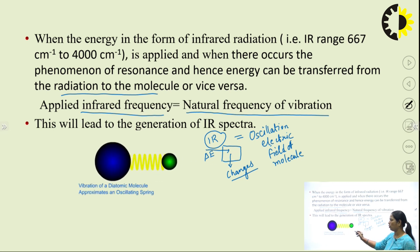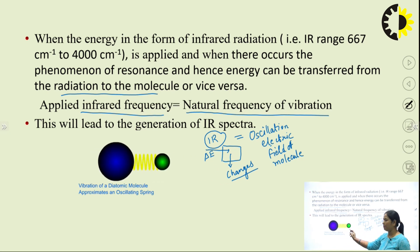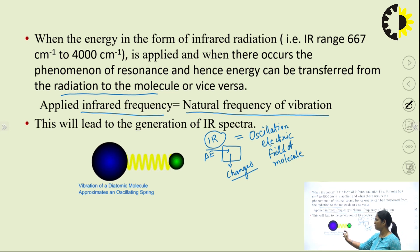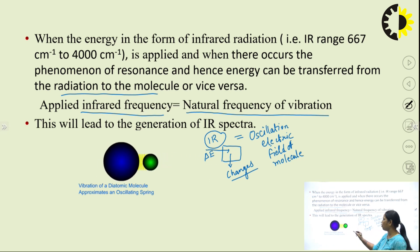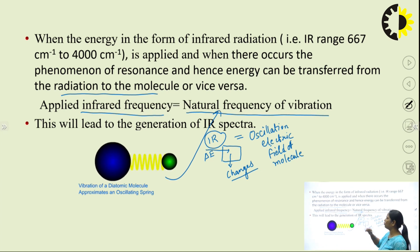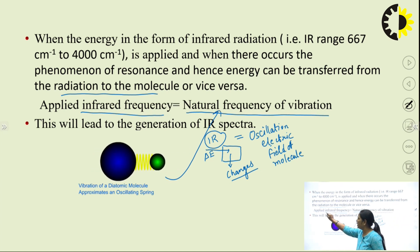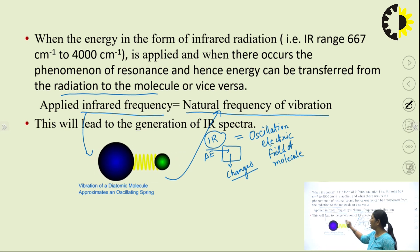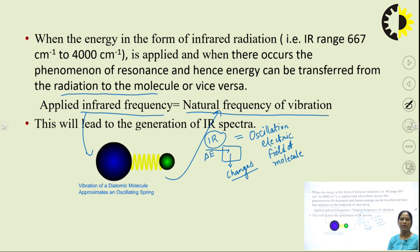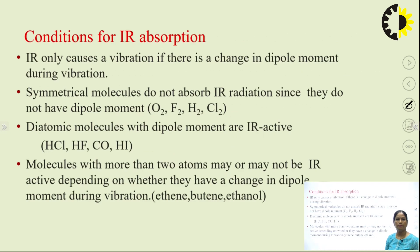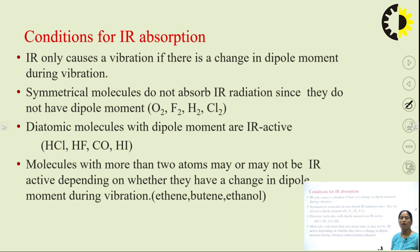You can observe in the diagram that whenever a diatomic molecule vibrates, it always has some natural frequency of vibration. So if the electric radiation of IR matches with this natural vibration, the spectrum will be generated. Now, coming to a very important part of IR spectroscopy: are all molecules IR active? Can all molecules generate an IR spectrum?